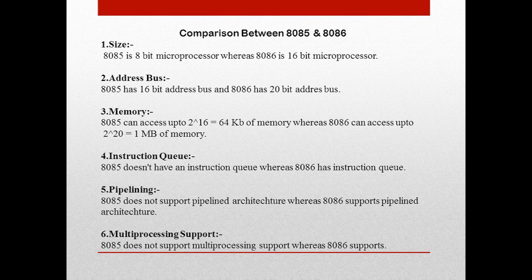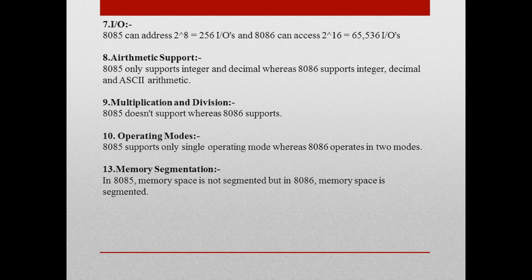Comparing 8085 and 8086: the 8085 is an 8-bit processor with a 16-bit address bus, accessing up to 64 KB of memory, whereas the 8086 is a 16-bit processor with a 20-bit address bus accessing up to 1 MB. The 8086 supports pipelining and multiprocessing, but the 8085 does not. The 8085 can address 2^8 I/O ports and the 8086 can address 2^16 I/O ports. The 8085 only supports integer and decimal arithmetic, whereas the 8086 also supports ASCII arithmetic.